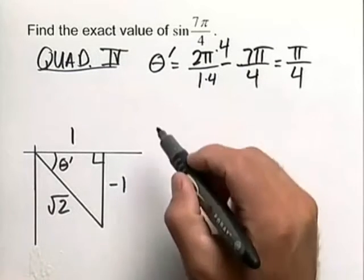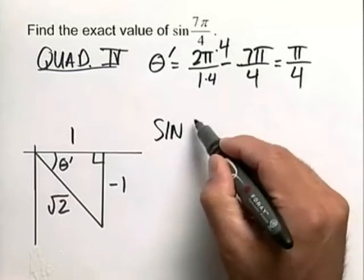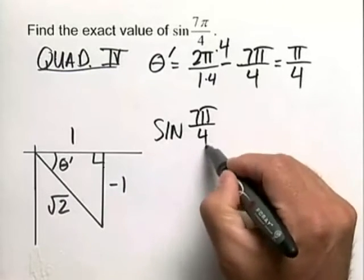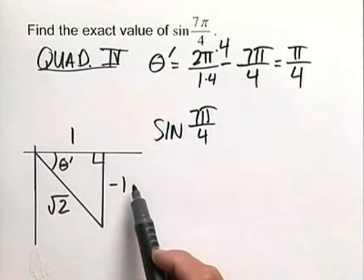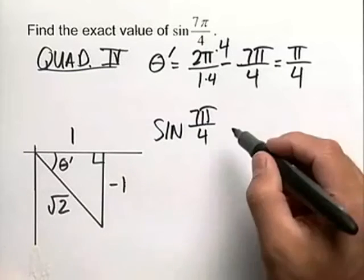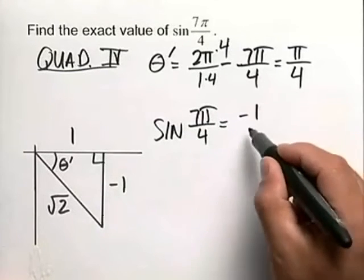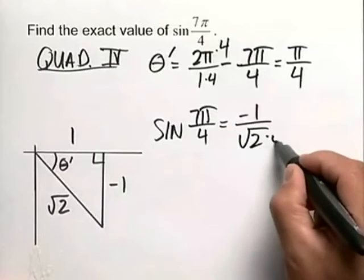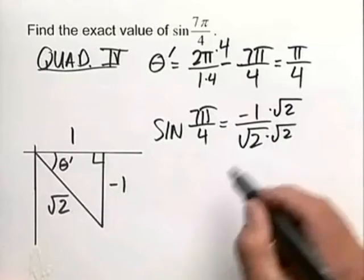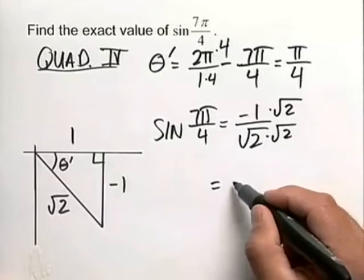So let's go ahead and determine that here. The sine of 7π/4, by looking at our reference triangle here, is opposite over hypotenuse. So we can write this as a negative 1 over the square root of 2 multiplied top and bottom by the square root of 2. And once we've rationalized this, we've got it.